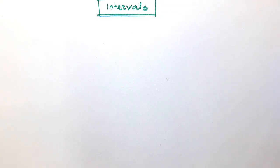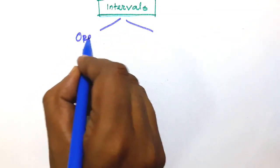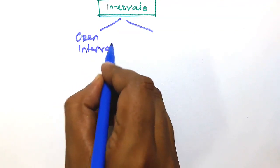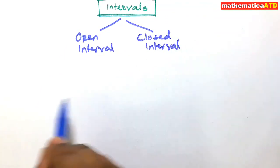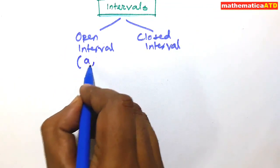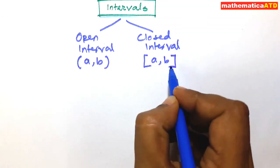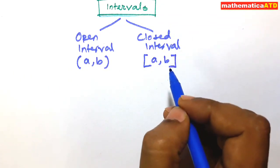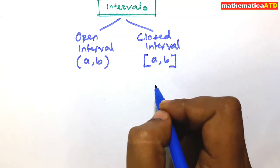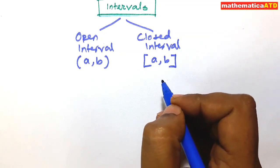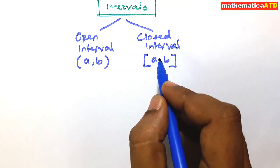Today's topic is intervals. In mathematics there are two types of intervals: open interval and closed interval. There are also two other types, respectively semi-closed interval and semi-open interval. We shall discuss one by one. Please see the whole video to understand the topic properly and subscribe this channel for more educational videos.